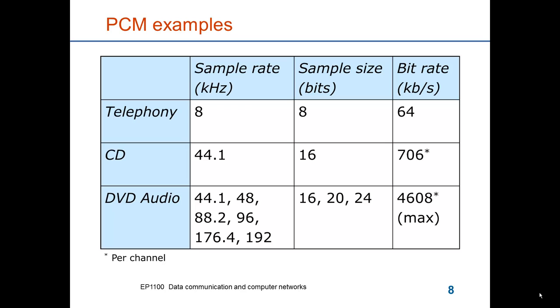And similarly for DVD audio, there is a whole set of sampling rates and a resolution of 16, 20 or 24 bits per sample, giving a data rate up to 4.6 megabits per second per channel.